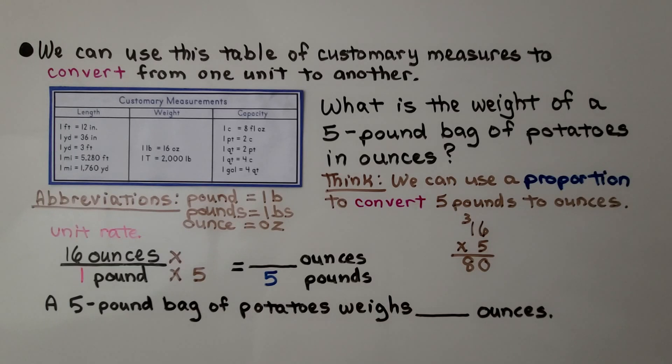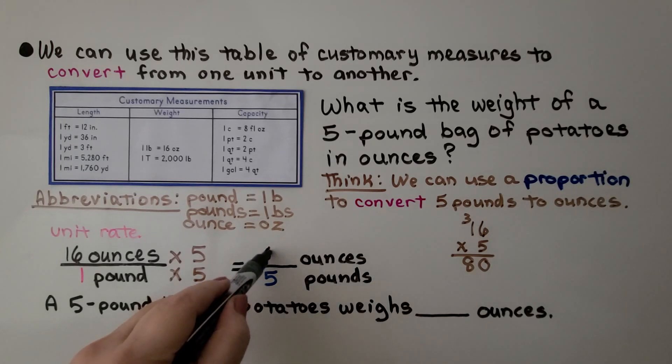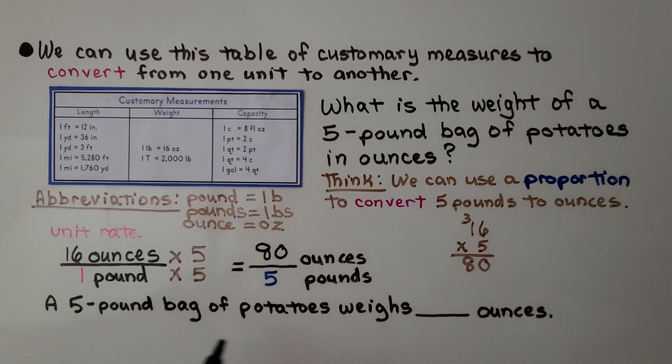We can use a proportion to convert five pounds to ounces. We have a unit rate of 16 ounces for one pound. We're trying to get five pounds in ounces. One pound needs to be multiplied by five. In order to be five, we need to multiply the 16 ounces by the same number. 16 times five is 80, so a five-pound bag of potatoes weighs 80 ounces.